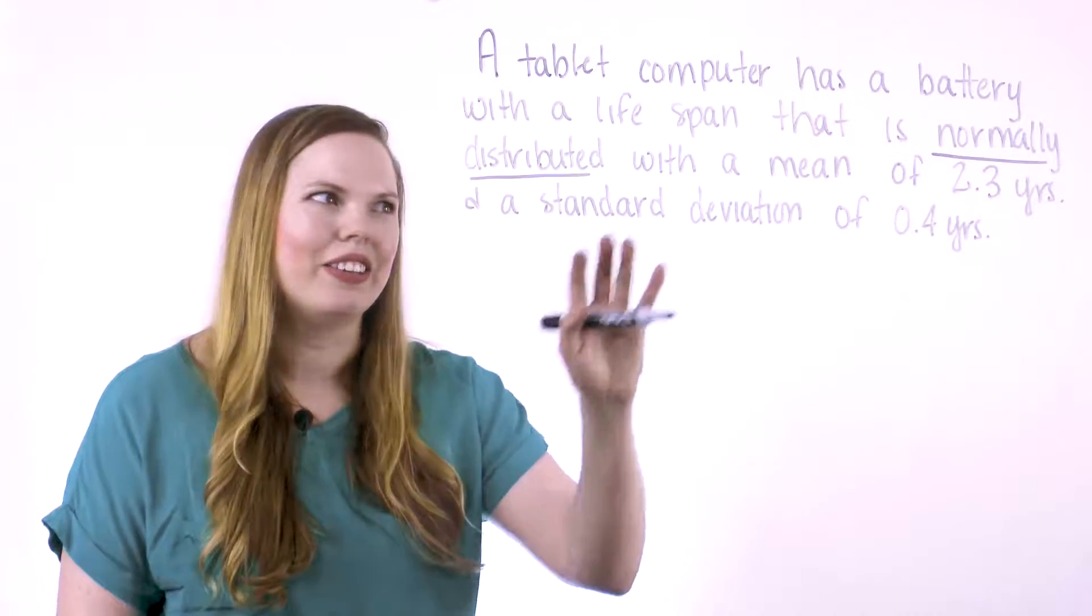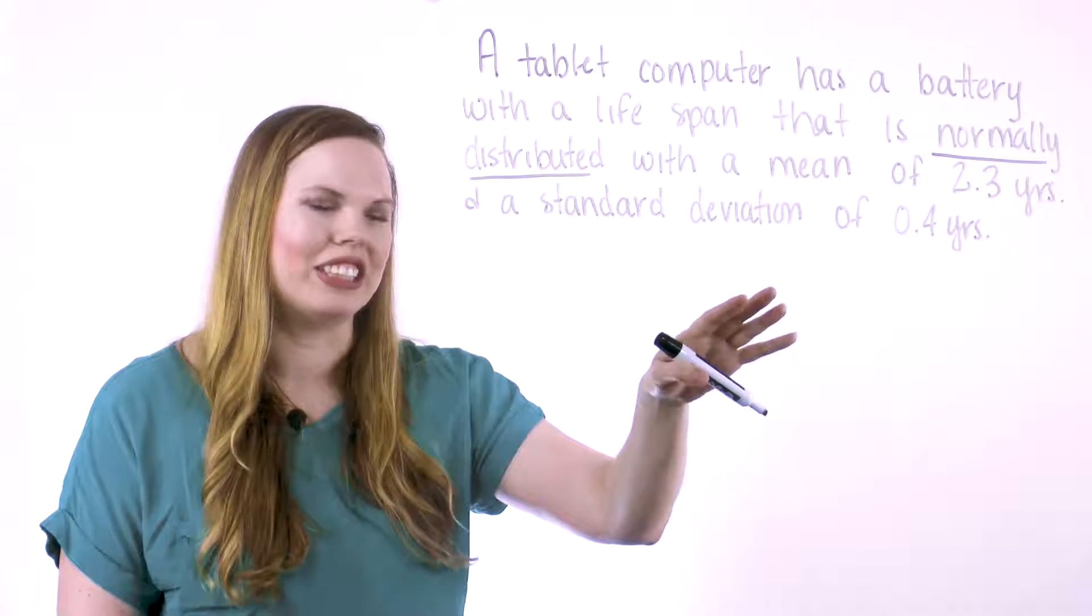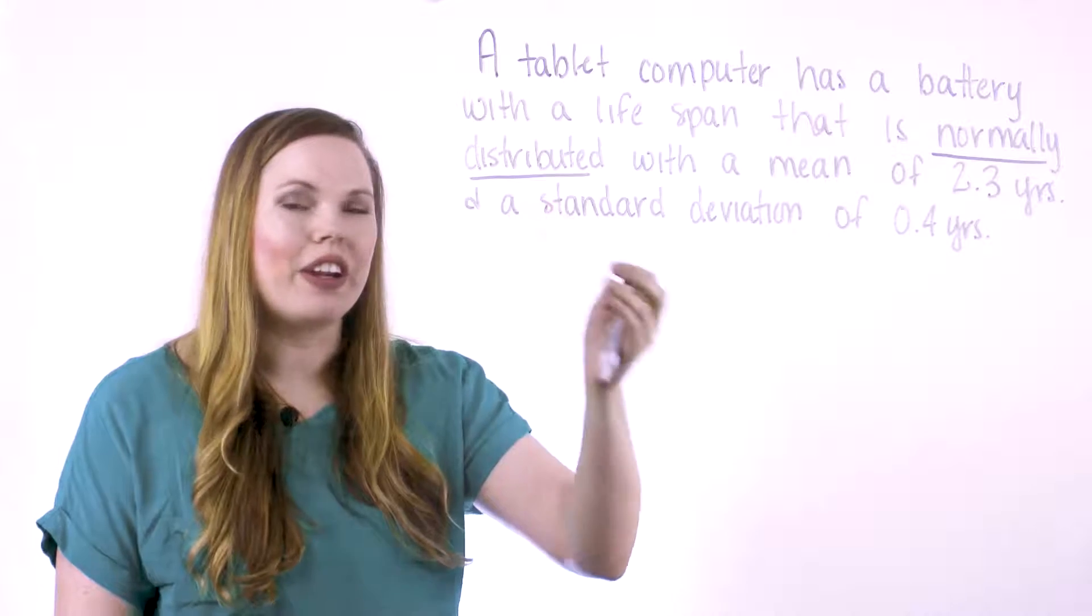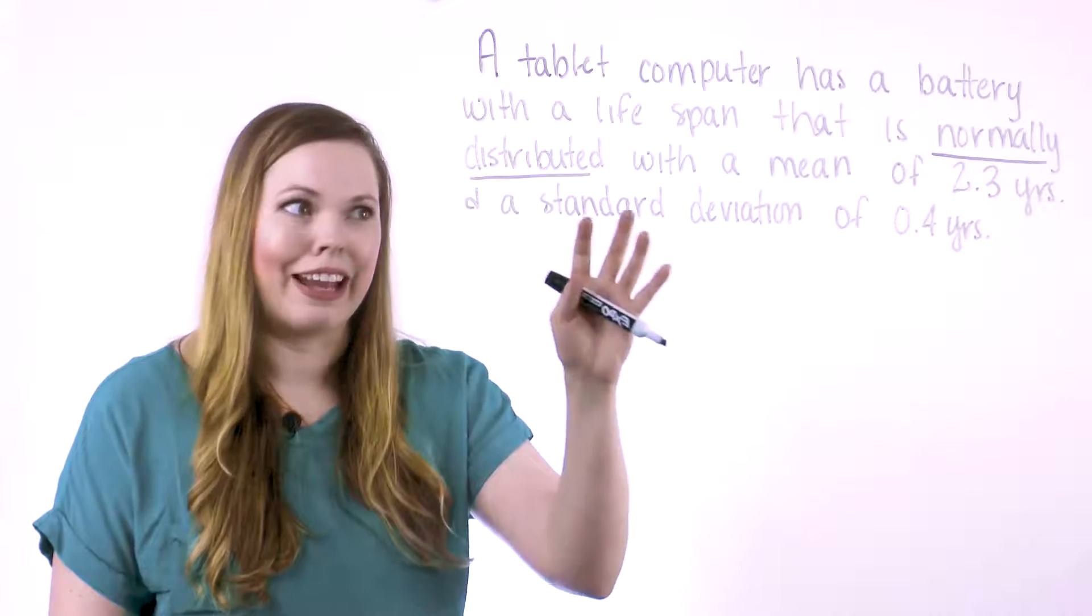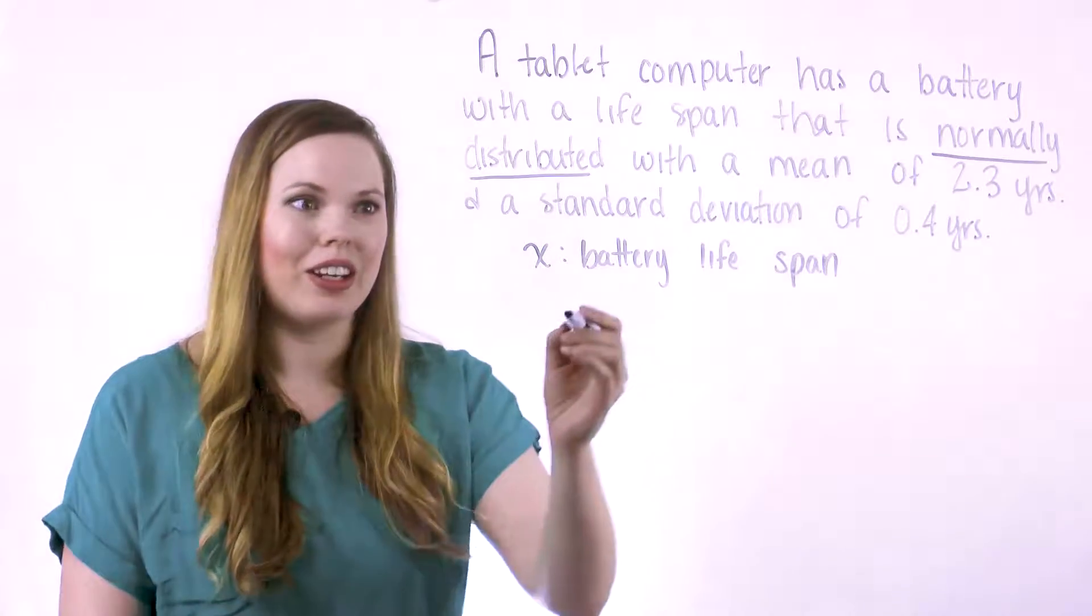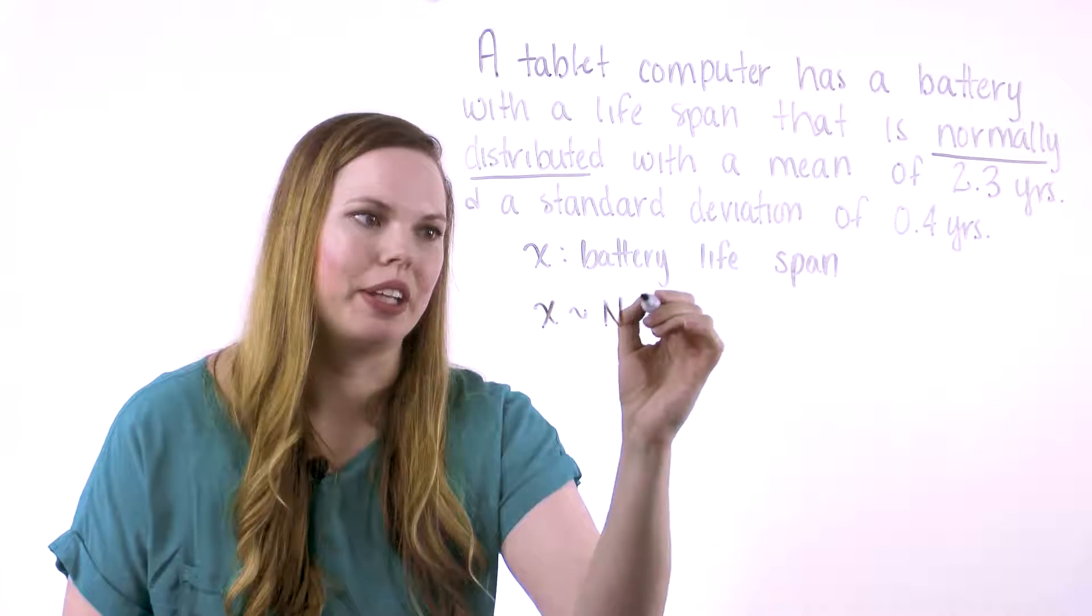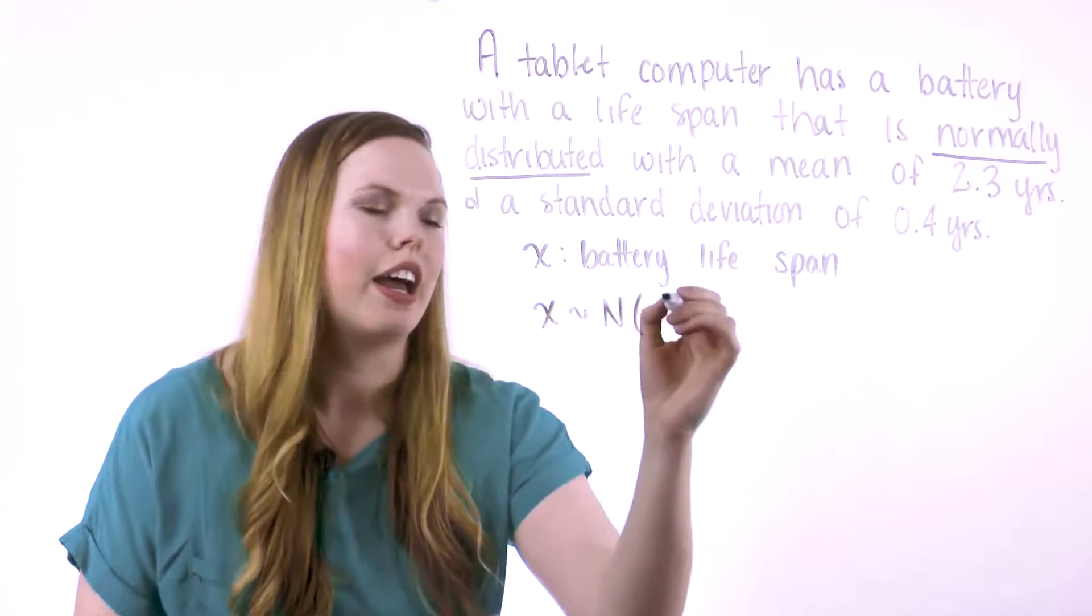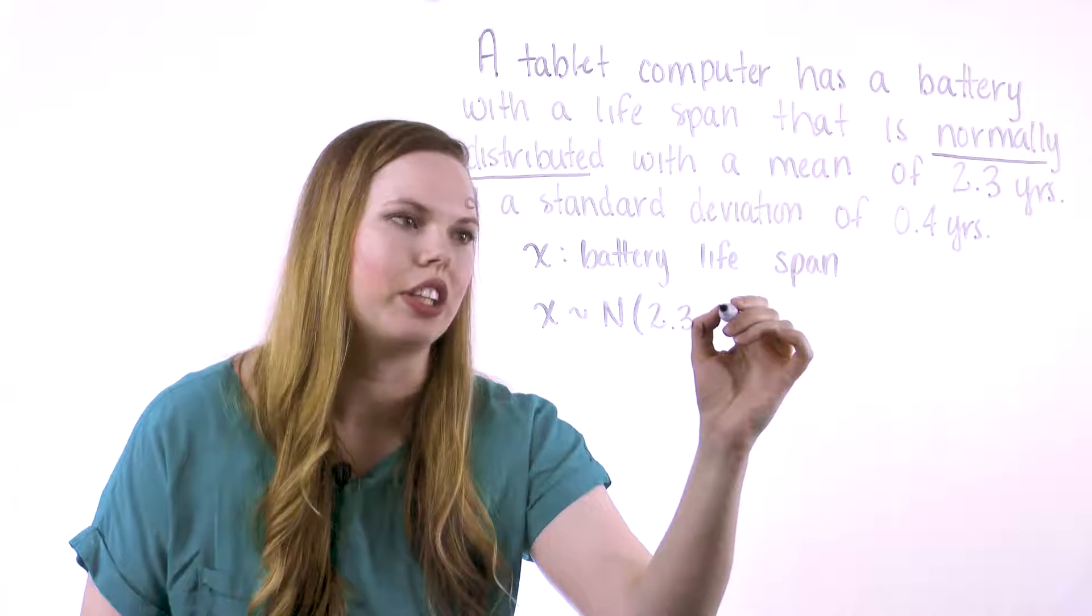So let's look, normally distributed, the mean is given, the standard deviation is given. So our variable here, we kind of have to decide on that, is the battery lifespan. That's our x. And we know that this x, our variable, is normally distributed with a mean of 2.3 and a standard deviation of 0.4.